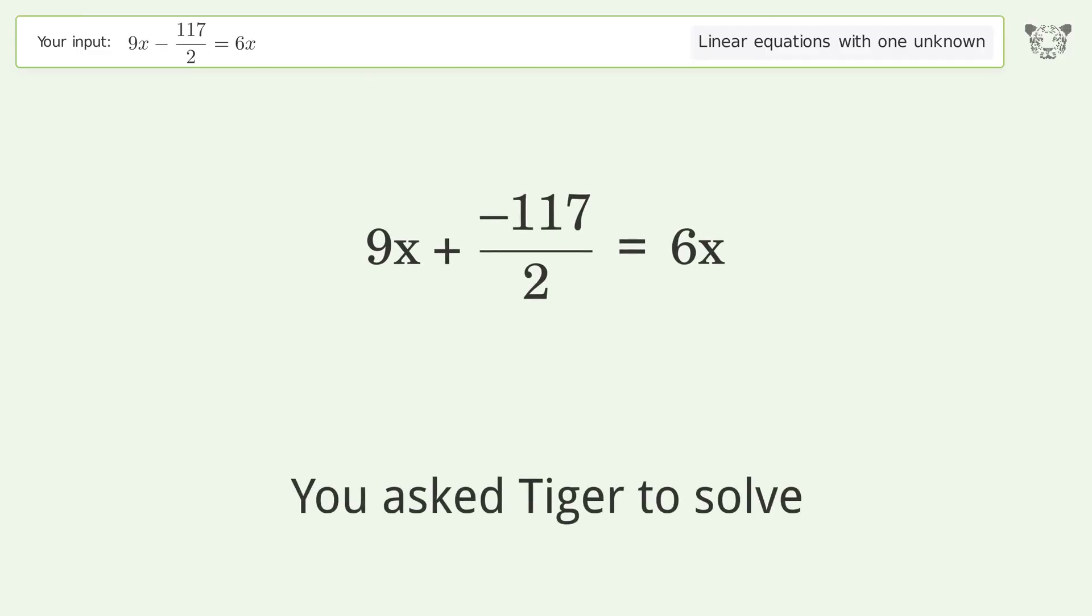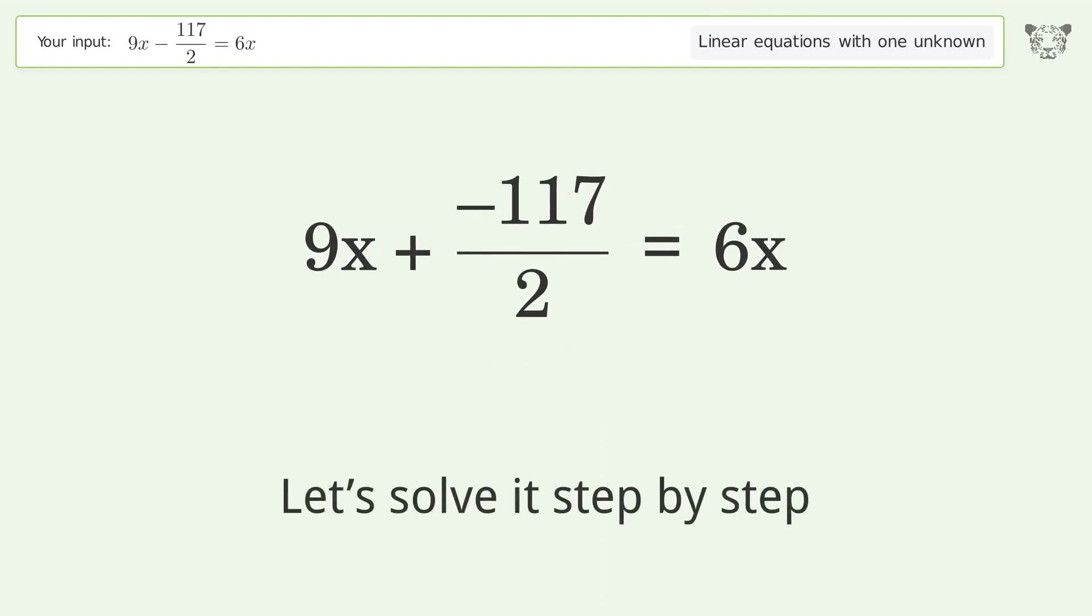You Asked Tiger to Solve. This deals with linear equations with one unknown. The final result is x equals 39 over 2. Let's solve it step by step.